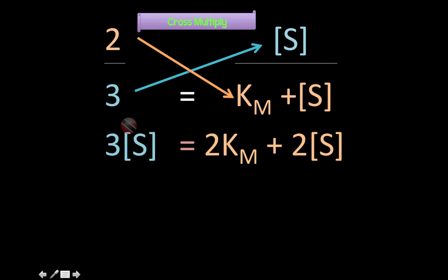So you're going to say three times the substrate concentration will be 3S. And then two times KM plus substrate concentration. Now a common mistake is that you only multiply this KM by two. Remember, it's the whole thing. It's KM plus substrate concentration is being multiplied by this two. So you get 2 KM plus 2S.